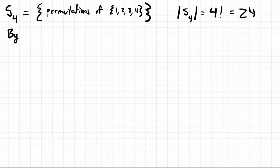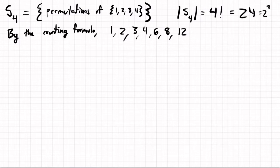By the counting formula, there might be subgroups of orders 1, 2, 3, 4, 6, 8, 12, since 24 is 2 cubed times 3. So these are the possible orders of groups.